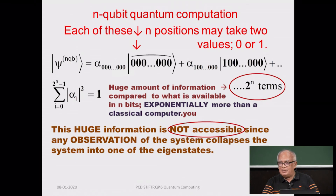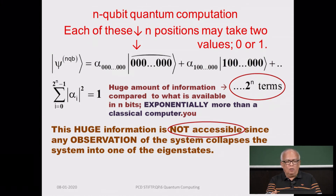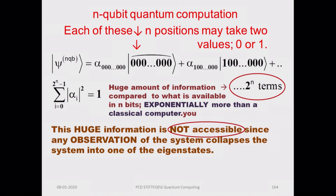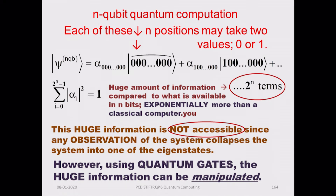If you defer the measurement process, in between you can process a lot of information with the superpositions simultaneously and manipulate that information. In the Deutsch algorithm, using two Hadamard gates before the control-F gate enabled processing all information at once — all four possibilities 00, 01, 10, 11 could be processed by that gate in one step. You cannot access all intermediate information, but manipulation of a huge amount of information in parallel is achieved using quantum gates.